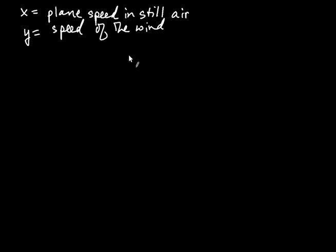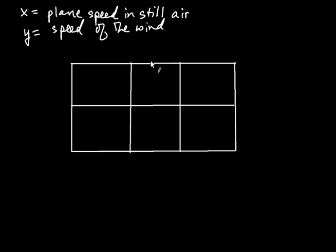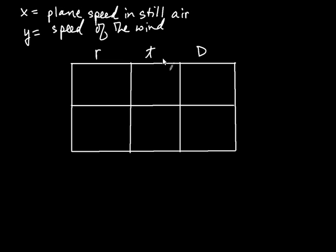Now we want to organize our information, and we're going to create a table. I recommend using this table whenever you have a rate-time-distance problem. We have two rows and three columns: column one is rate (R), column two is time (T), and column three is distance (D).